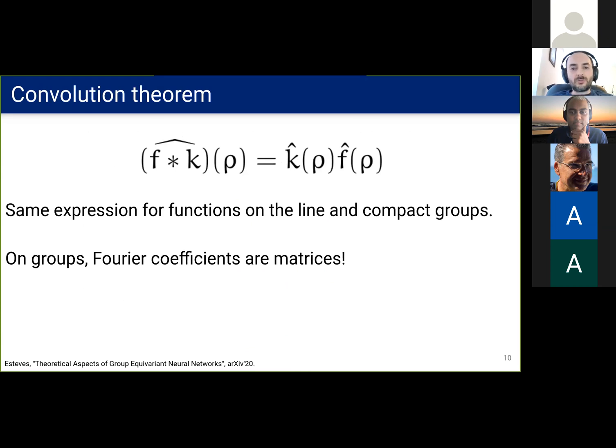Now recall the convolution theorem, which says that convolution corresponds to multiplication in the spectral domain. The same expression applies for compact groups, but now the coefficients are matrices. This is key for efficient computation of group convolutions, and group convolutions are the way to achieve equivariance to a group.